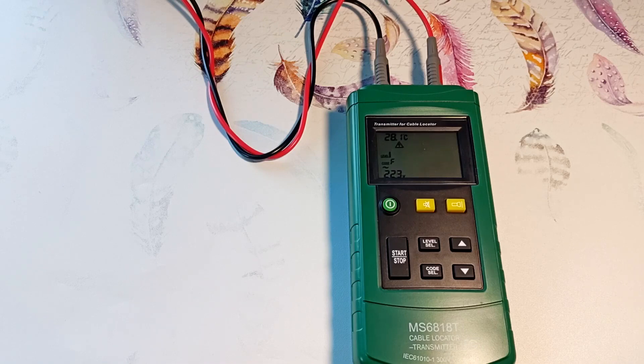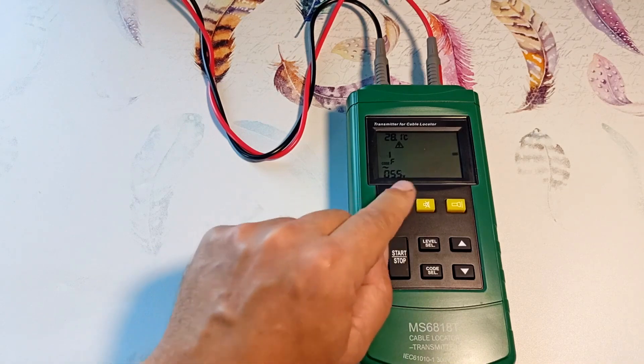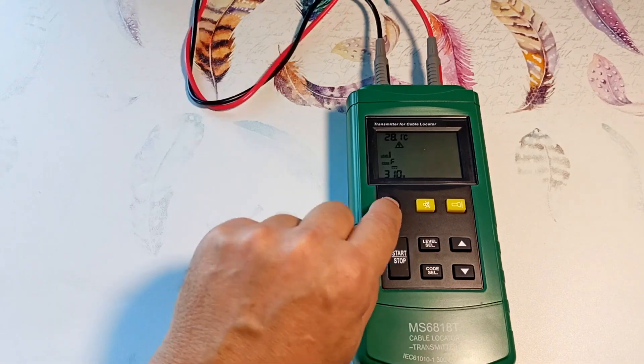If the generator is connected to the network under voltage, it cannot be turned off. Here I turn it off. It restarts and stays on again. First, we remove the probes from the socket and then we can turn off the device.